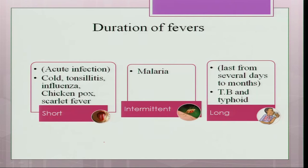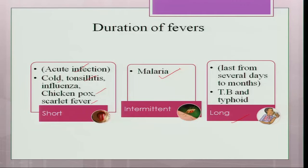The duration of fever can be short, intermittent, or long. Short-duration fever is always due to acute infection — it may be caused by cold, tonsillitis, influenza, chicken pox, or scarlet fever, lasting two or three days before subsiding. Malaria is an intermittent fever — one day you have fever, then you do not, then it recurs. Long-duration fever lasts for several days to months; a low-grade fever is seen in tuberculosis, while typhoid presents with a high-grade fever that also takes a longer period to subside.